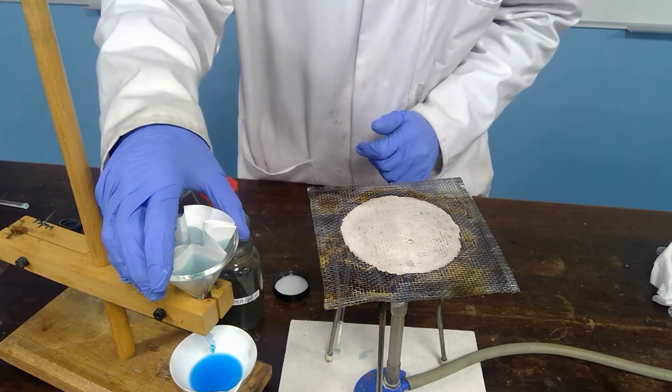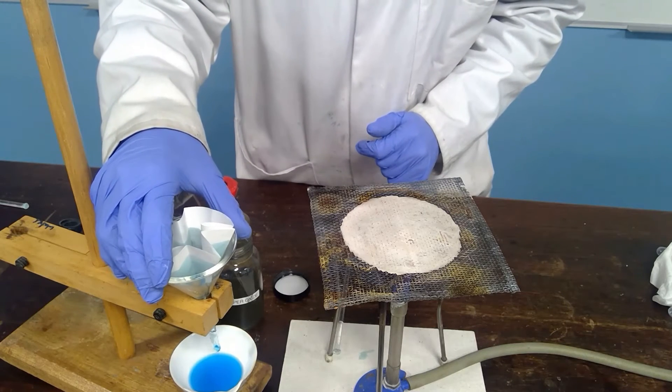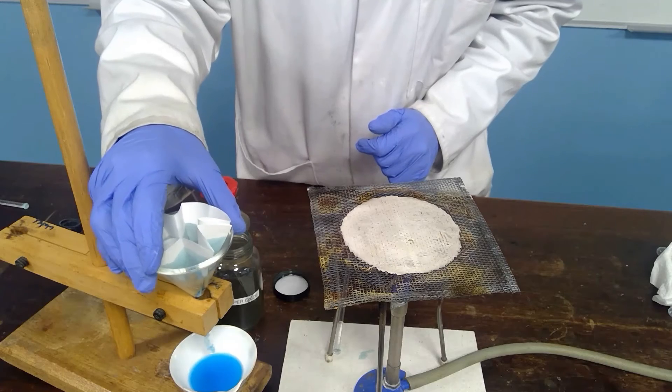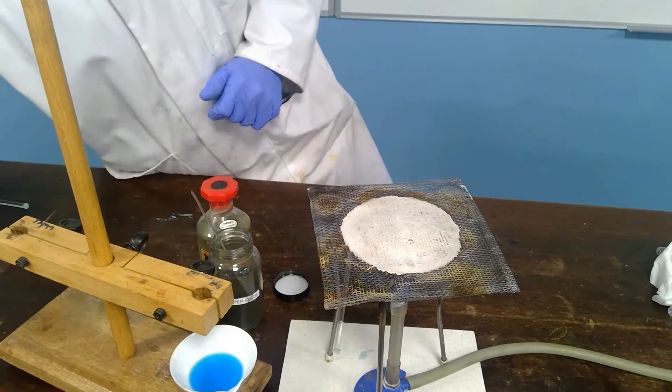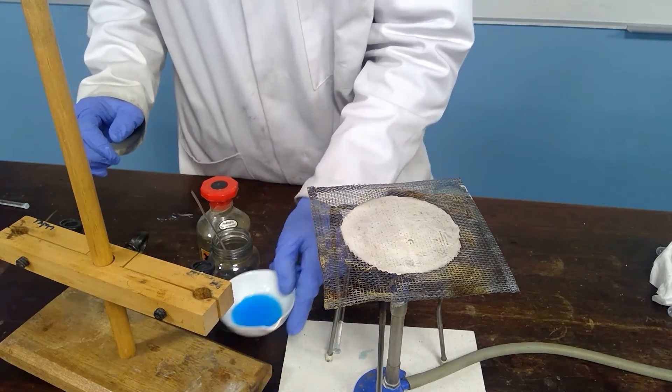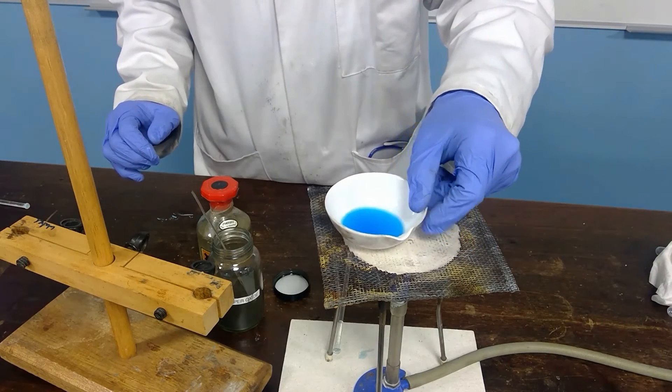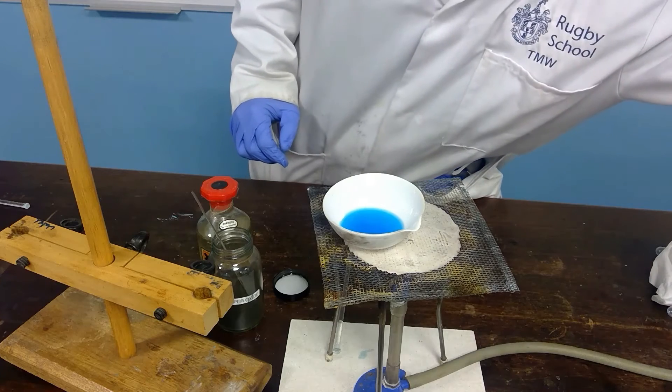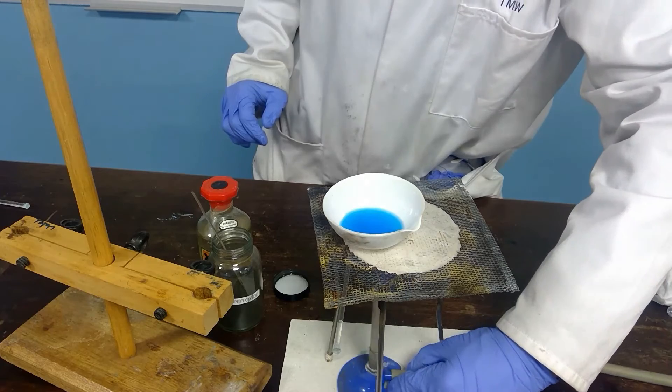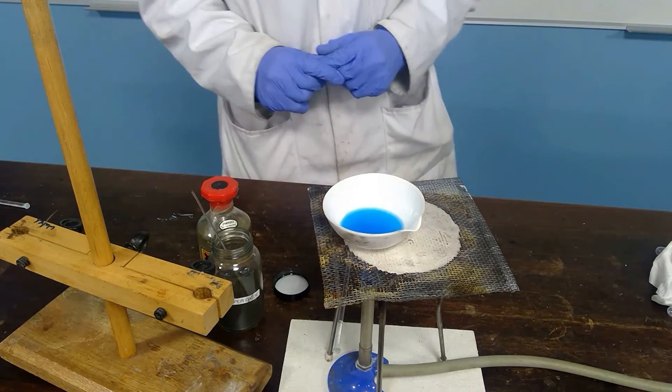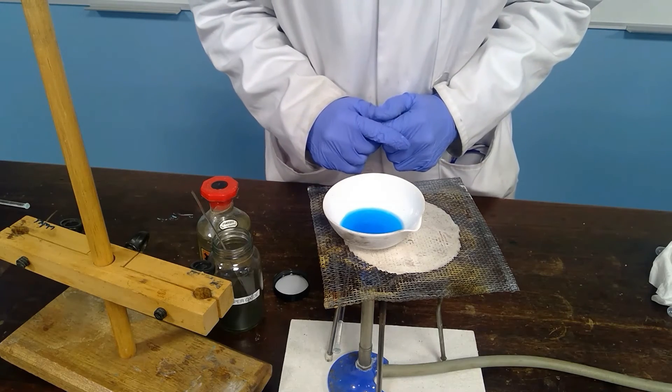But once you think you have sufficient of the blue solution, we need to effectively get rid of the water to leave us with the copper sulfate crystals. So we remove this at this stage. And we will place this back onto the Bunsen. So we just raise the temperature slightly again and we start to heat.